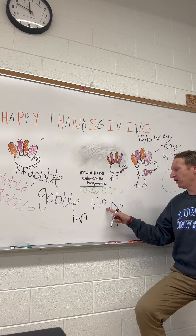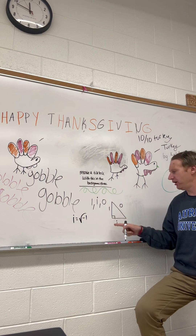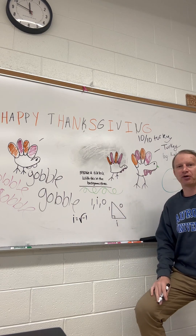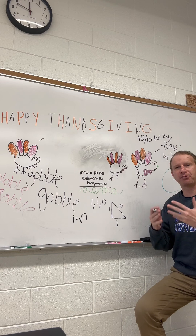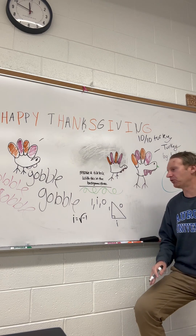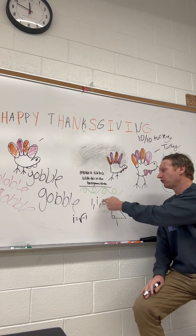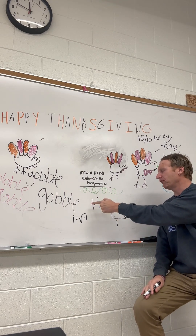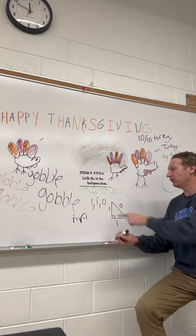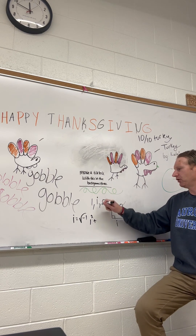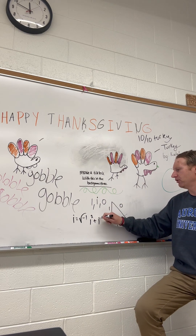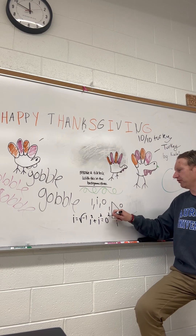So we have a right triangle with side lengths one, i, and zero. Can we form a right triangle? In other words, does it satisfy the Pythagorean theorem, a squared plus b squared equals c squared? These numbers are in order from smallest to greatest, so we have a squared, which is one squared, plus i squared. Does that equal zero squared?